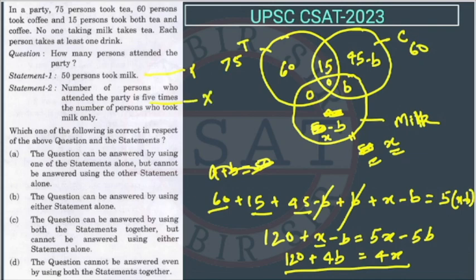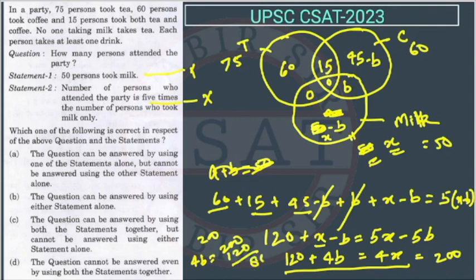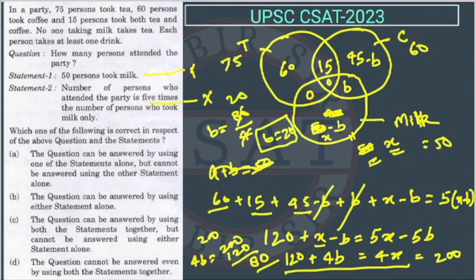If we take both statements together, X becomes 50. So the equation becomes 4 times 50 equals 4B plus 120, which gives 200 equals 4B plus 120, so 4B equals 80, and B equals 20. Now we have the value of B as 20, so we can calculate how many persons attended the party. By using both statements together, we can find out the answer, so the answer to this question is option C.